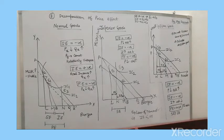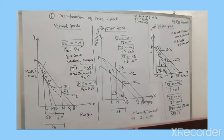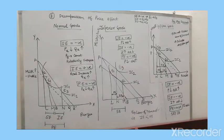Now, between E1 and E2 we measure the substitution effect. Between E2 and E3 we measure the income effect. And E1 to E3 is the price effect — that is what we have basically decomposed. So E1 to E3 is the price effect, E1 to E2 is substitution effect, and E2 to E3 is income effect.